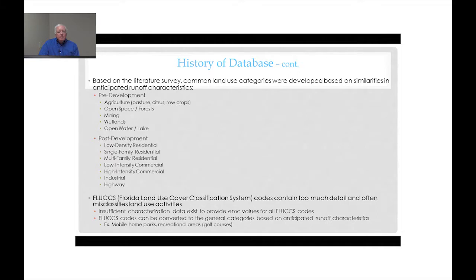A frequent question that engineers ask is whether you can use FLUCCS codes to identify land uses with respect to runoff characteristics, and the answer generally is no. FLUCCS codes are too specific in most cases to have available runoff characterization data for that level of specificity. They also don't necessarily group land uses together which have similar runoff loading generation potential. For example, mobile home parks, which have a relatively low runoff loading potential, are often grouped with multi-family residential, which has a much higher runoff potential. So FLUCCS codes are not generally useful for identifying land uses with respect to runoff EMCs.